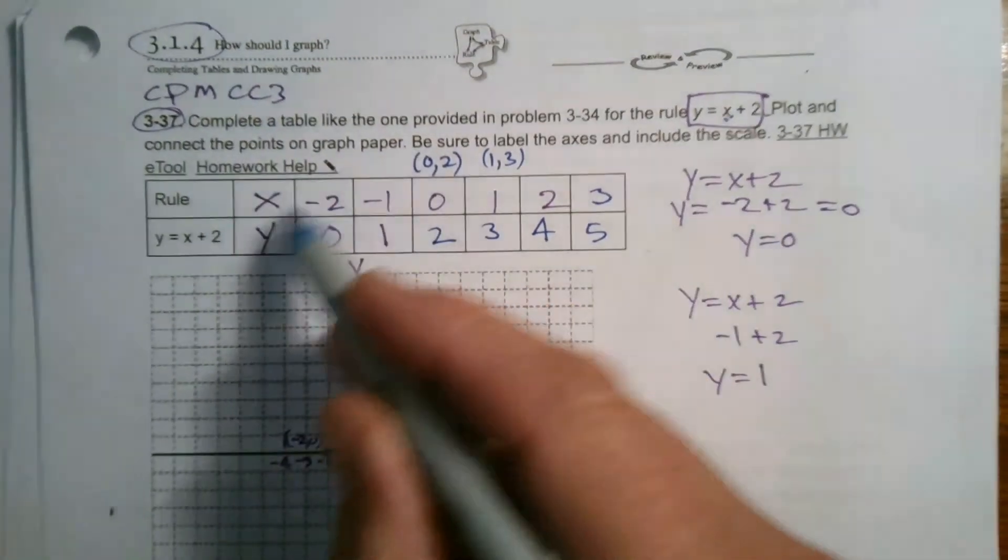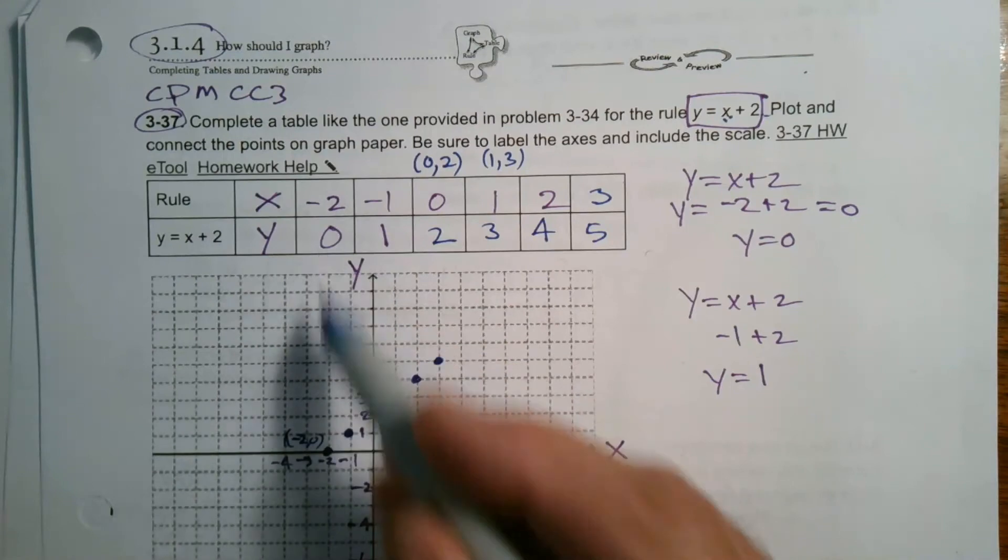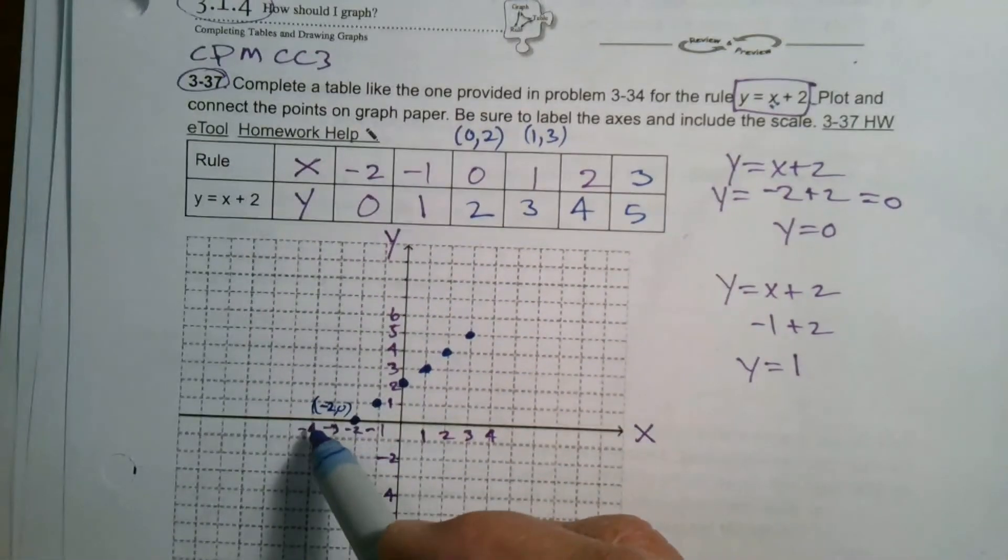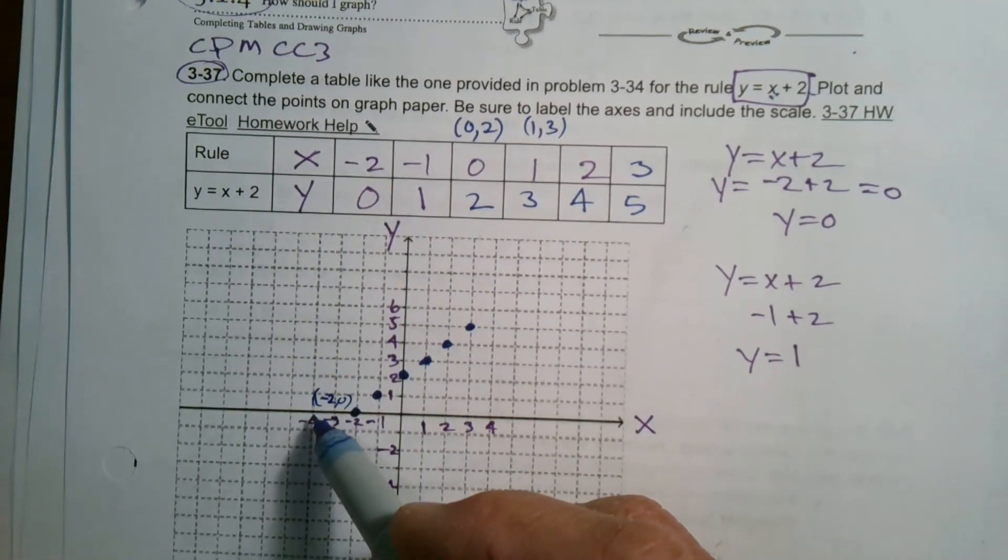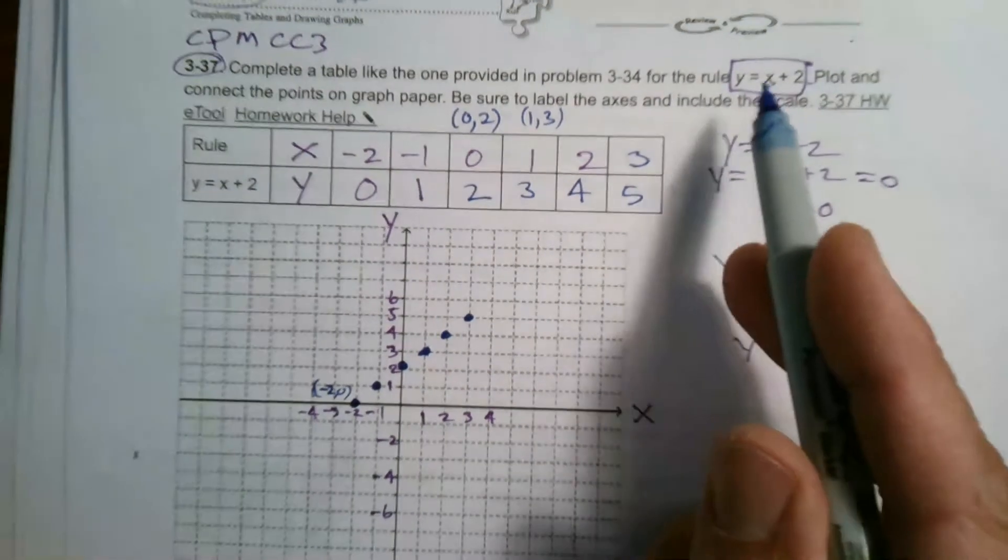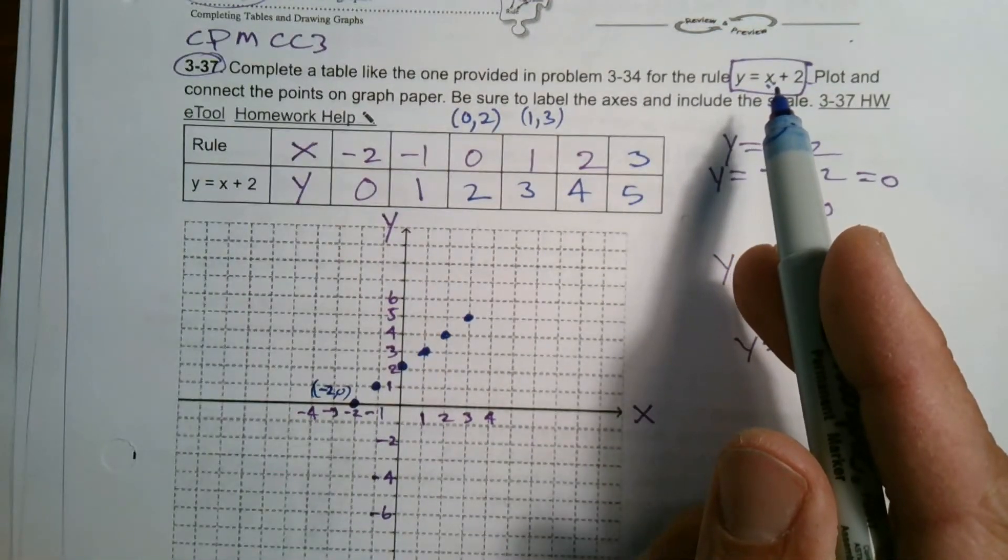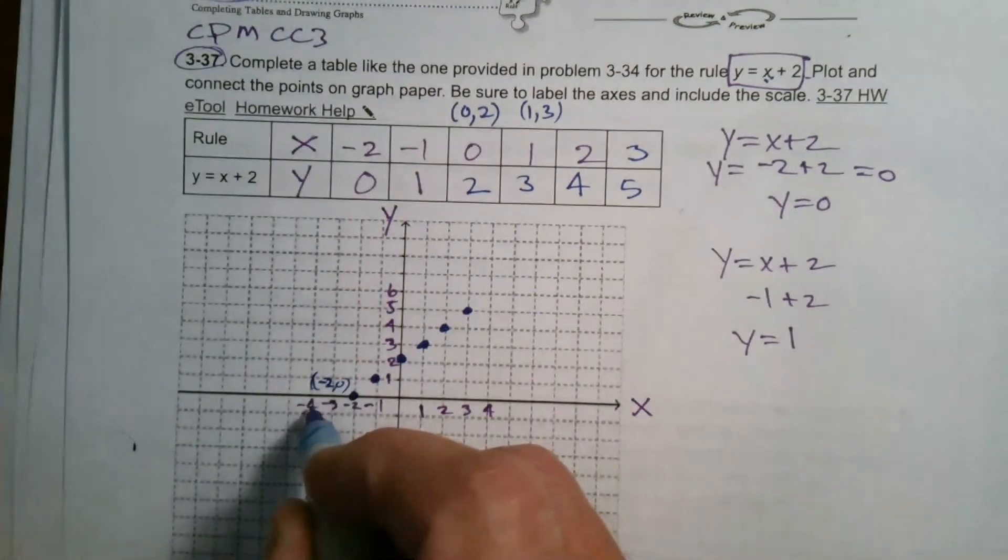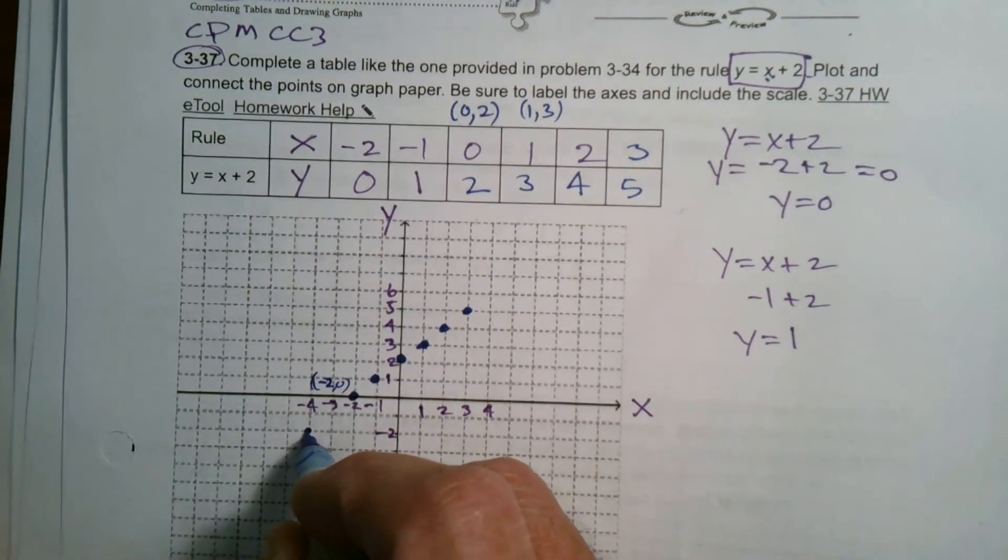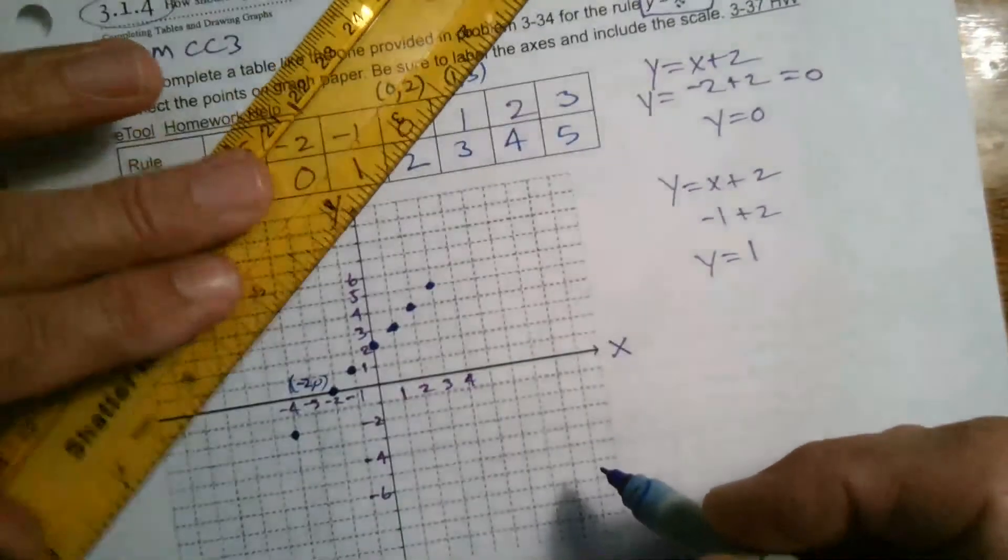And I could have even further negative values. I could put negative 4. If I put negative 4 in, if I put negative 4 into x, I'll get negative 2 for y. Negative 4, negative 2 is right here. So again, it continues to follow that pattern.